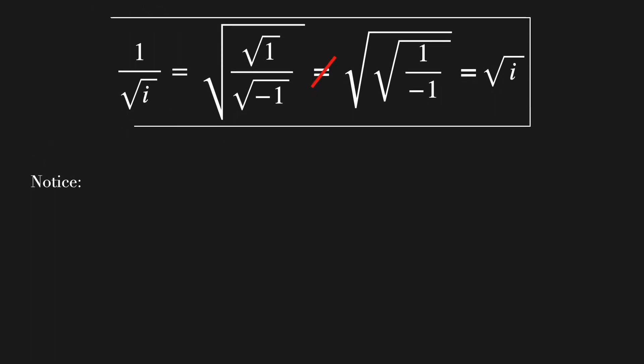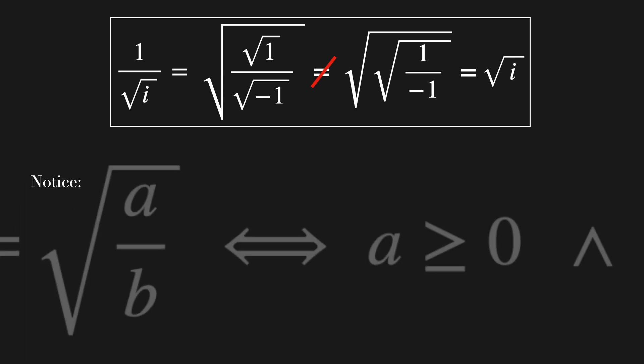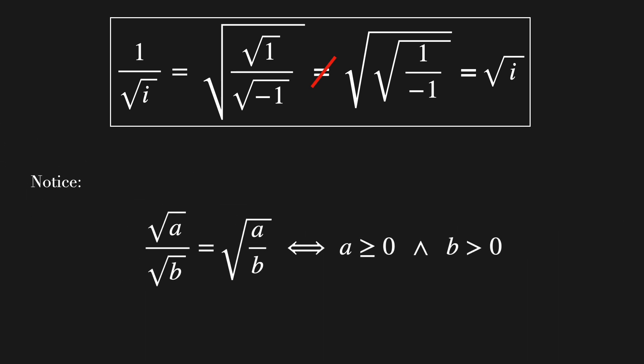But why? Well, the answer is that the property that the square root of A over the square root of B equals the square root of A over B is valid if and only if A is greater than or equal to 0 and B is greater than 0. So the problem is that we cannot apply this property for the square root of minus 1. And that's where the contradiction lies. If you enjoyed this video, give it a like, subscribe to the channel, and you might want to watch this other video right here. See you guys there.